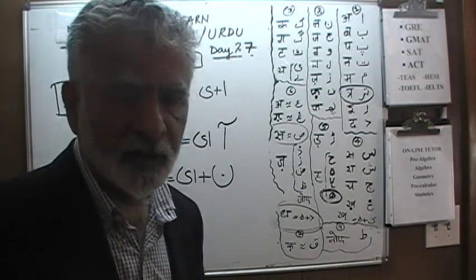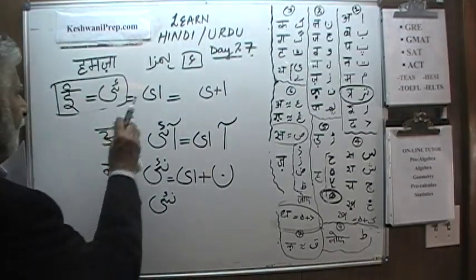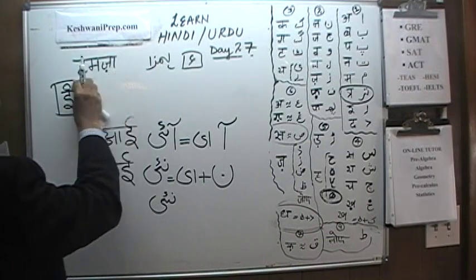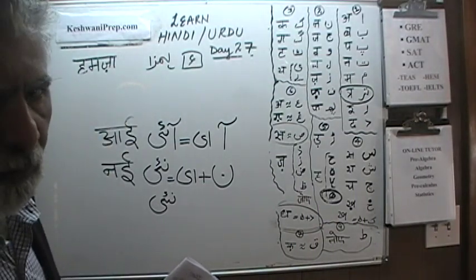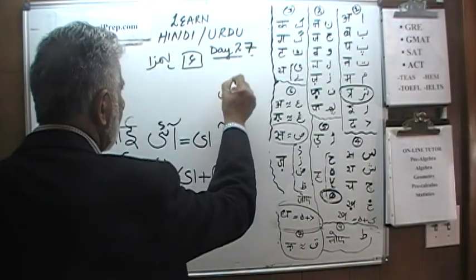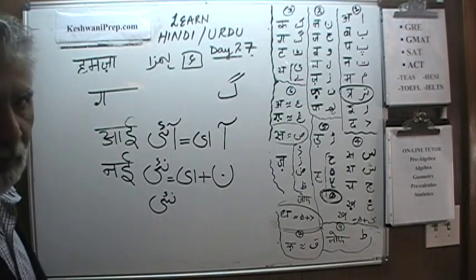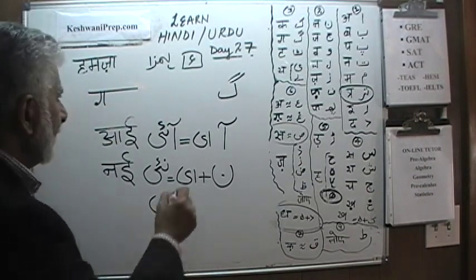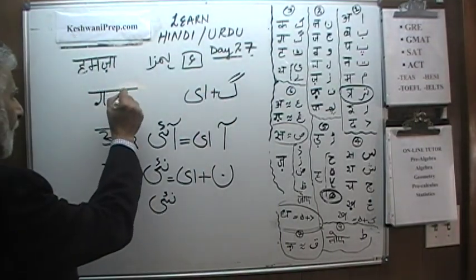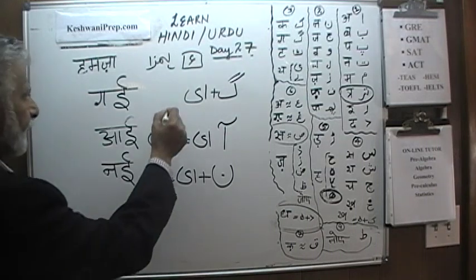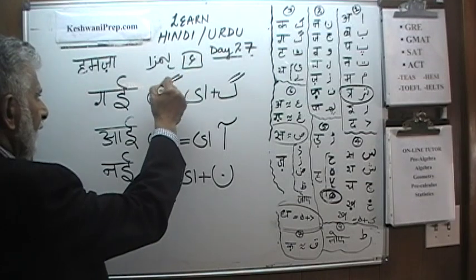The reader will immediately understand what you are writing — 'nai,' as in 'no.' Let's do one more. Here's a Gaaf — I bet you can't figure out what the word is going to be. 'Gaai' — as you can see they all follow with the 'ai' sound. So here is a Gaaf and another loop for Hamza: 'gaai.'